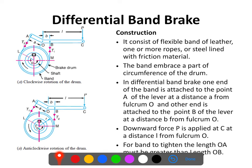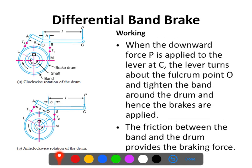The band is partially wrapped around the drum. One end of this band is connected at point A while another is connected at point B. The fulcrum is at point O. Point A is at a distance 'a' from O, and point B is at a distance 'b' from O. Since no end of the band is connected to the fulcrum, it is called a differential band brake. The braking force P is applied at point C, which is at a distance L from fulcrum O.